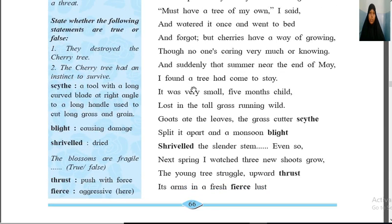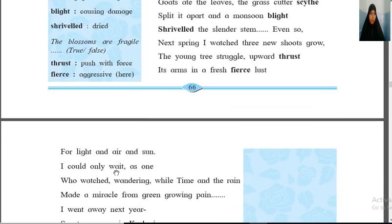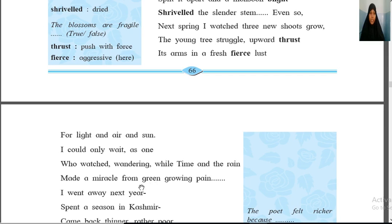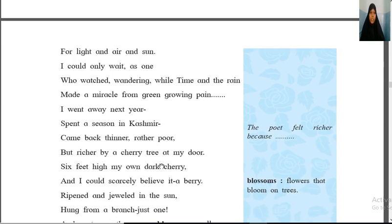There are more colors mentioned in the poem. 'Green growing pain here' — green color of the cherry tree growing. 'Made a miracle from green growing pain.' Here the green color of the cherry tree is growing, bearing all the struggle against the goats and the grass cutter who came and cut it down — yet again it had grown. So green color represents the cherry tree.